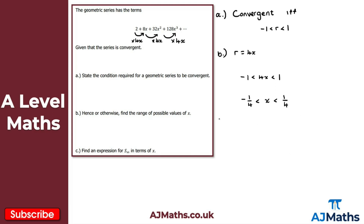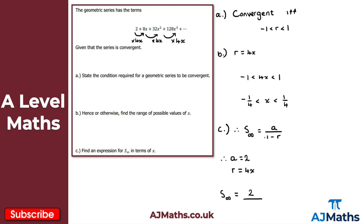For part C, find an expression for the sum to infinity in terms of x. Recalling the formula, sum to infinity equals A over 1 minus R. Here A is the first term which is 2, and R equals 4x as established in part B. So the sum to infinity is 2 over 1 minus 4x. That's our solution to question 3.